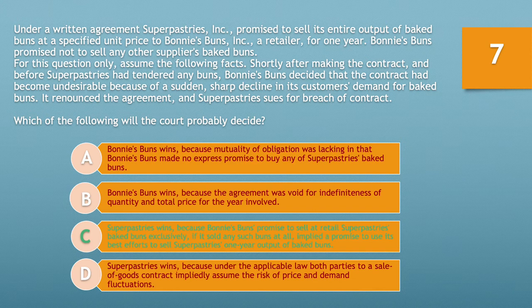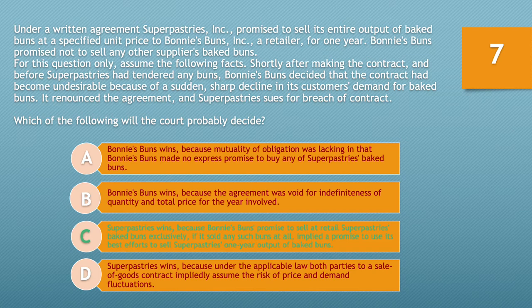If you chose option C, you'd be correct. Super Pastries wins because Bonnie's Buns promised to sell Super Pastries' baked buns exclusively, which — if it sold any such buns at all — implied a promise to use its best efforts to sell Super Pastries' one-year output. A requirements contract states the quantity of goods in terms of buyer's requirements, seller's output, or exclusivity. Consideration is found from the buyer being required to meet all its requirements from the seller, despite the contract not expressly requiring any fixed quantity.